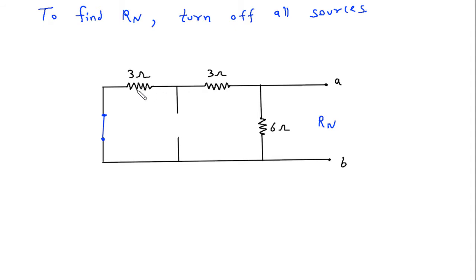Now as you can see that this 3 ohm and 3 ohm are in series, so this will be 6 ohm. And 6 ohm parallel with 6 ohm, so this will be 6 into 6 by 6 plus 6 is equal to 3 ohm. Therefore Rn is equal to 3 ohm.